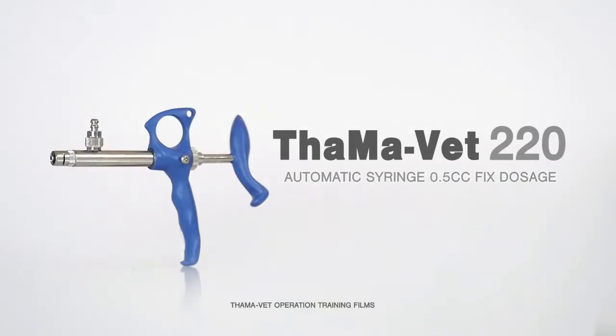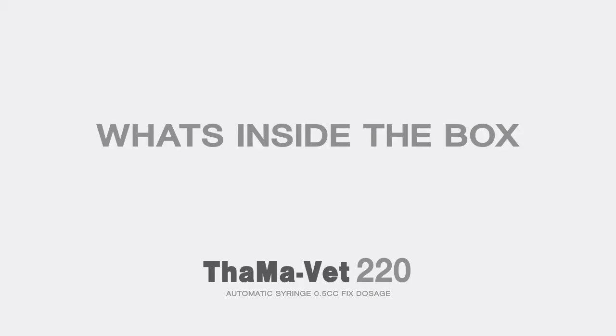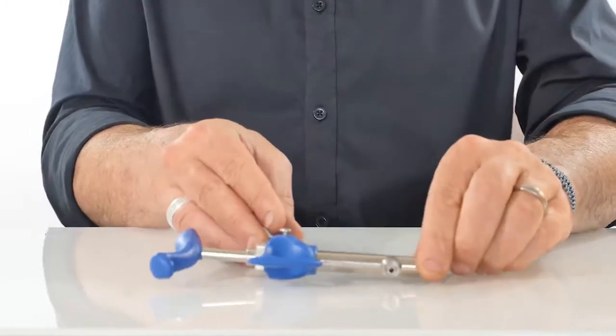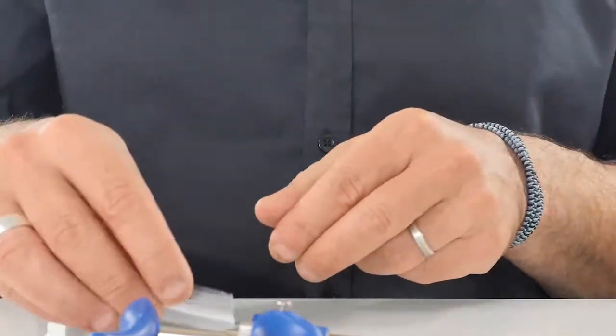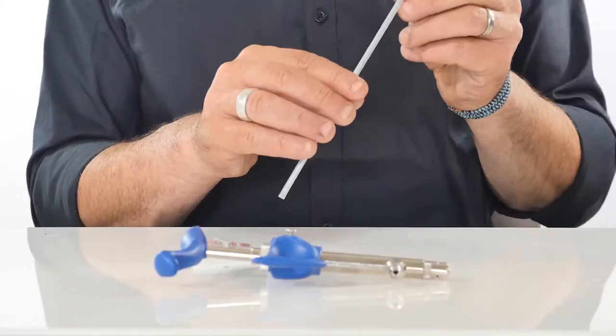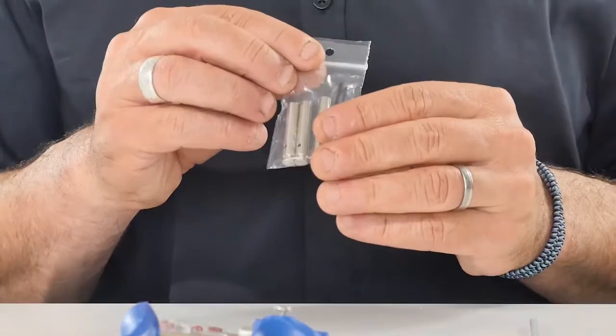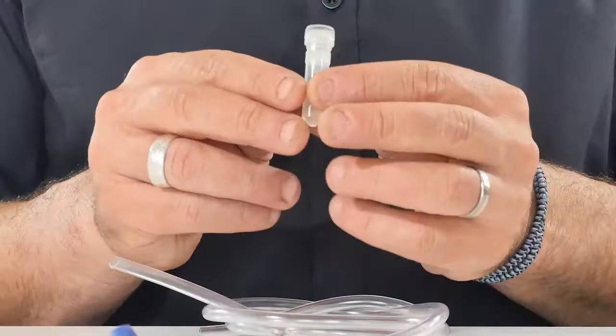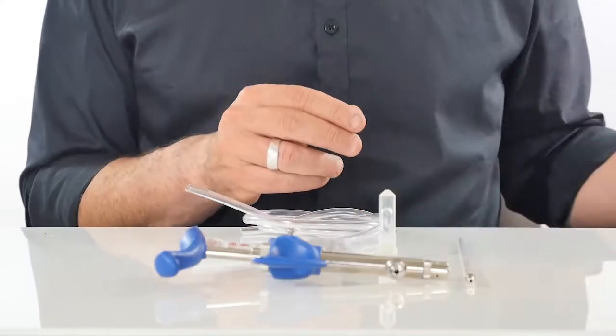TAMA 220 automatic syringe, 0.5cc fixed dosage. What's inside the box: TAMA 220 syringe, spare parts kit, long cannula, piston set, plastic hose, castor oil, and manual.